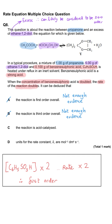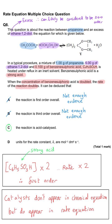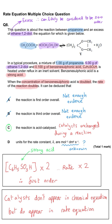Option C states the reaction is acid catalysed — yes, we can confirm this. Benzene sulfonic acid does not appear as a reactant or product in the equation, so it must be a catalyst. Doubling its concentration doubles the rate, making it first order, and since it is unchanged overall it is a catalyst. Option D cannot be confirmed because we don't know what the overall order is, so we can't determine the units of the rate constant. So C is correct.